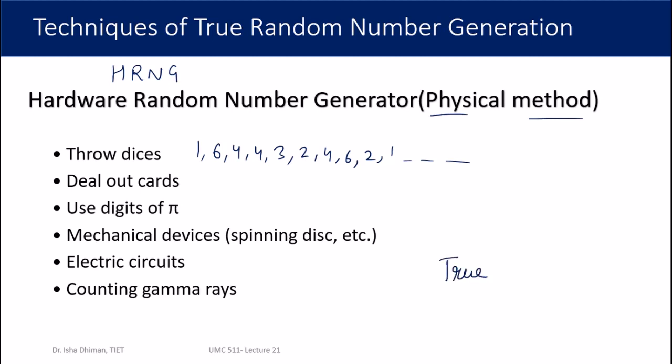If you Google 'true random numbers,' you'll find websites offering true random numbers as a service. They obtain them from physical processes — for example, one website measures atmospheric noise in a particular area, quantifies it, and provides it to users. A physical process must be connected to a computer so you can access the random data. Because of many applications, scientists are in high demand for truly random, unpredictable data.